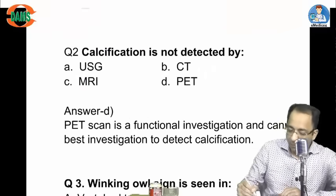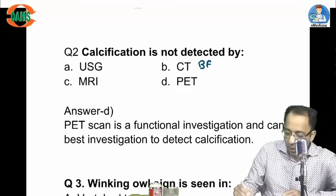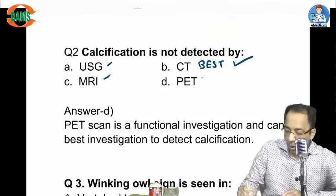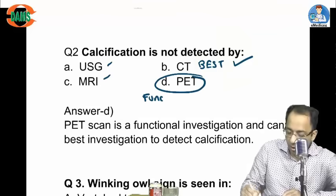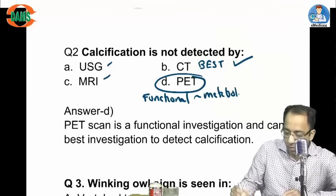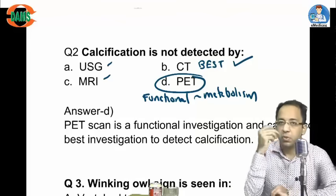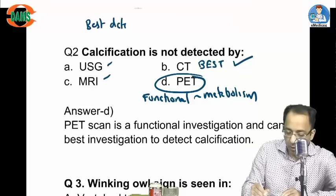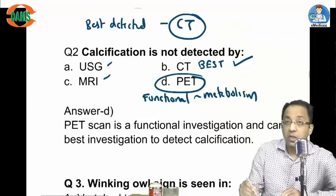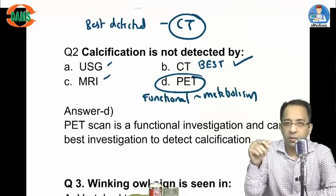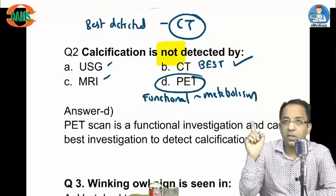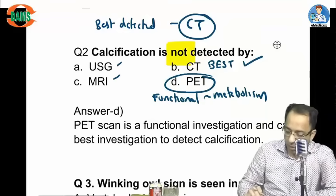Calcification is not detected by PET scan. Remember, calcification is best detected by CT; it can also be detected by ultrasound and MRI, but not by PET, because PET is a functional scan based on metabolism and cannot pick up a structural finding. If the question asks what best detects calcification, the answer is CT. But if asked what does not detect it, mark PET scan.